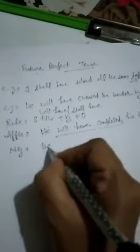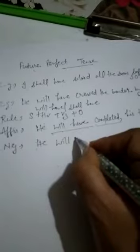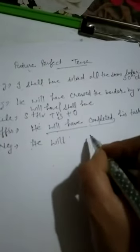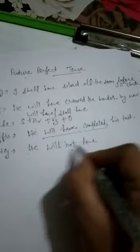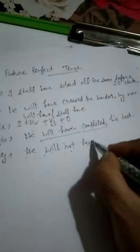This is the rule for the negative form. When we use the negative type, we always use 'not' after the helping verb — 'will not have'. We do not use 'not' after 'have'; between 'will' and 'have' we will use 'not'. Example: He will not have completed his task.